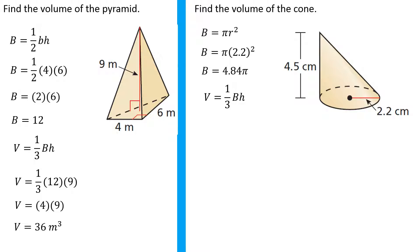Of course, for the volume of the cone, one-third times the area of the base times the height. Area of the base was 4.84 pi, the height is 4.5.